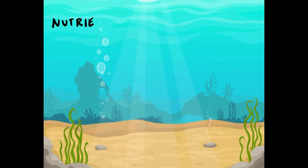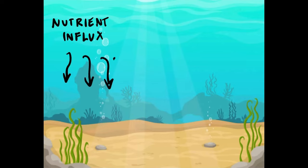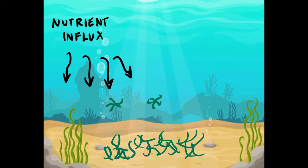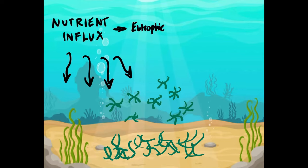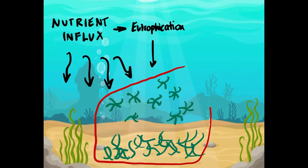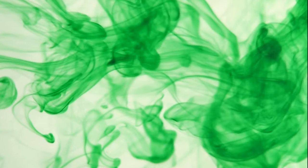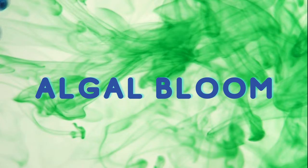Understanding why dead zones form is crucial to preventing their emergence in the future. Dead zones are primarily the result of excessive nutrient flow into select regions of water. These nutrients, namely nitrogen and phosphorus, come from fertilizers, waste, and surface runoff of rainwater. This influx of nutrients stimulates the growth of algae in a process called eutrophication — when a body of water becomes overly enriched with certain nutrients, causing a variety of ecological issues. The result of eutrophication is an abundance of nutrients that causes dense populations of algae to rapidly grow, a phenomenon called algal bloom.